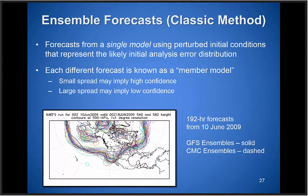Now we'll move on to ensemble forecasts. In classical ensemble construction, you run a single model repeatedly with slightly perturbed initial conditions, trying to make those initial condition changes represent the uncertainty in the initial analysis and capture the error distribution. Each forecast in the ensemble is known as a member — you may have 20 or 50 member ensembles. If constructed correctly, large spread implies low confidence in a particular feature, while small spread hopefully implies high confidence — in things like the location of a trough axis, ridge, or tropical cyclone.